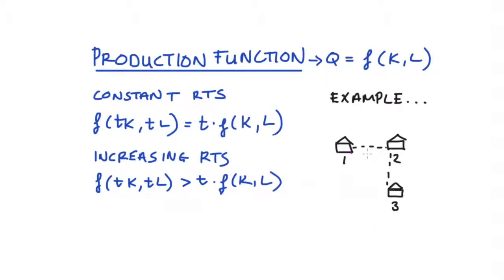But note now that I have the original connection between houses 1 and 2, but I also have two more connections between houses 2 and 3 and also between houses 1 and 3. The connection between 1 and 3 is mediated by the connection between 1 and 2. So I doubled the inputs to production, but I got greater than double the output back. I got three connections. This is increasing returns to scale.